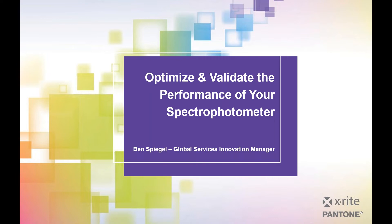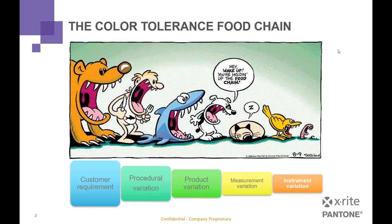Thank you, Robert. Hello everyone. Thank you for joining us today to talk about ways to optimize and validate the performance of your spectrophotometers. To start out, we want to look at the color tolerance food chain. We're all working towards our customer requirements — that end tolerance the process needs to return. As you go deeper into the process, tolerances get tighter and tighter due to stack-up throughout production. At the very bottom of the food chain is instrument variation, which needs to be the tightest of all, since it could potentially introduce the most variation and reduce the tolerance band for the rest of production. That's what we're going to be focusing on today.